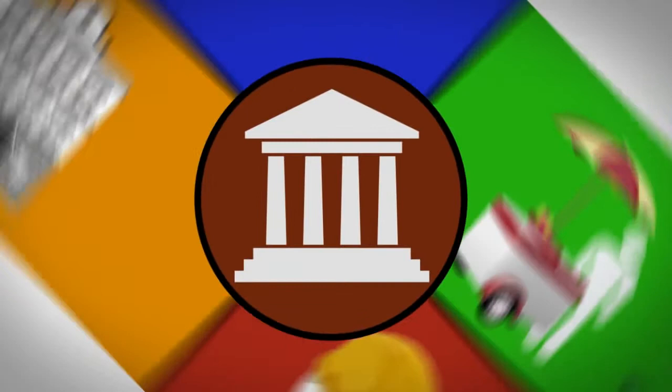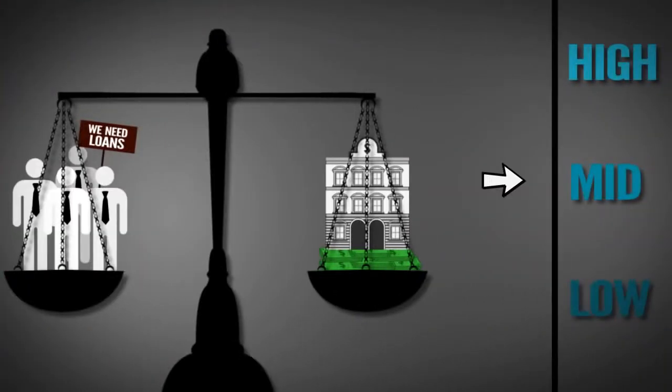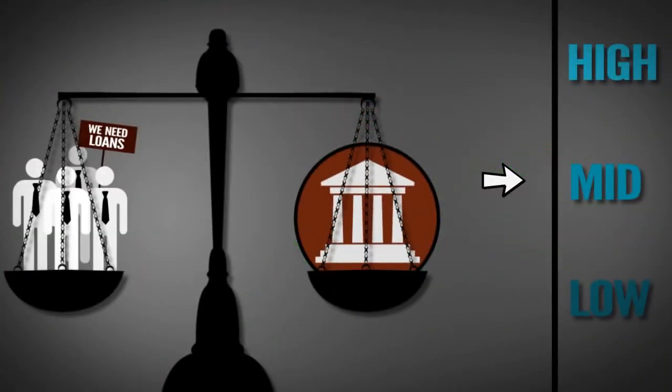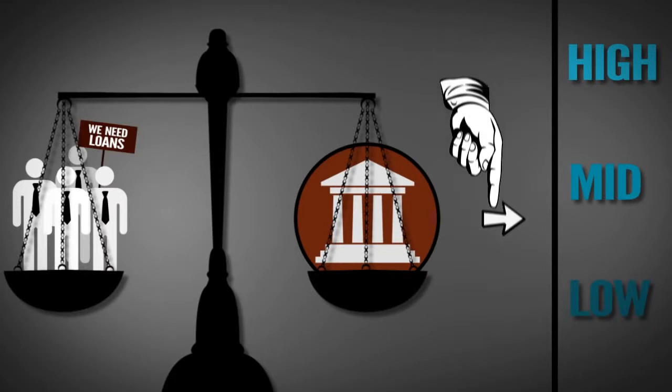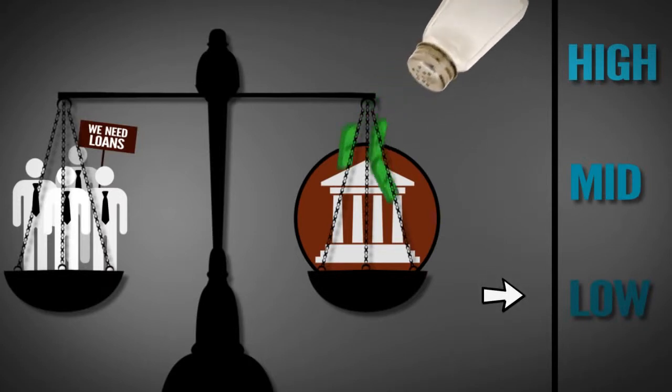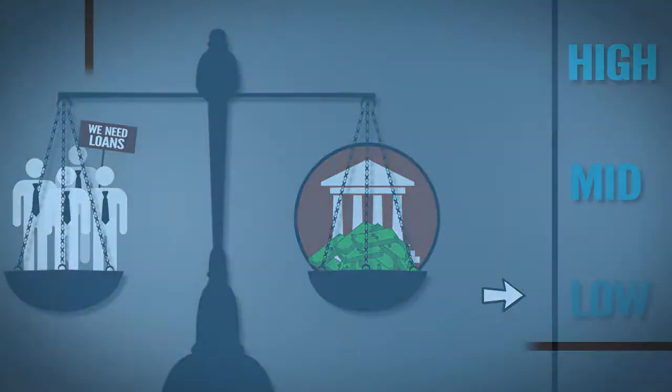Instead, this precise system gets turned on its head when governments intervene. Remember that interest rate? Well, when central banks meddle with it, it no longer represents the true relationship between savers and consumers. In fact, central banks often intentionally lower the interest rate to help stimulate the economy. How do they do this? By creating new money to inject into the economy.